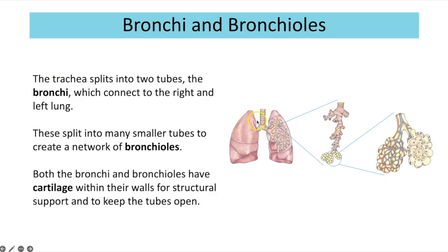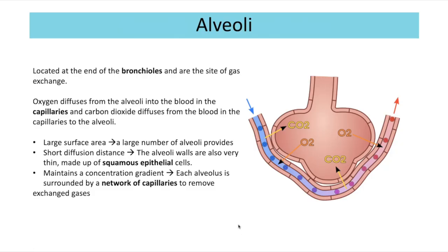The trachea splits into two bronchi — left and right — leading to each lung, and those bronchi split into the bronchioles. Both the bronchi and bronchioles have cartilage in their walls for structural support, though the smaller bronchiole tubules further down lose their cartilage. The bronchioles end at the alveoli, which are air sacs and the site of gas exchange. Oxygen diffuses from the alveoli — where there is a high partial pressure — into the blood where partial pressure is lower. Carbon dioxide moves in the opposite direction, diffusing from the blood into the alveoli where it will be exhaled.